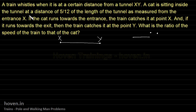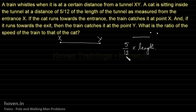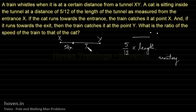The cat is sitting inside the tunnel at a distance of 5/12 of the length of the tunnel as measured from entrance X. A ratio has been given, so we can simplify by saying it is 5/12 times the length of the tunnel. We can assume the length is some multiple of 12. We start by assuming the length is 12 kilometers, so 12 cancels and we get the cat sitting at 5 km from X, with 7 km remaining towards the other side.